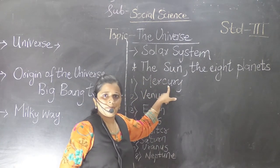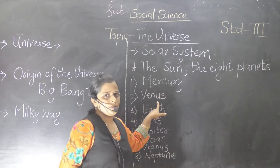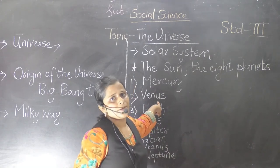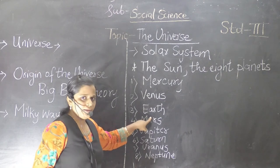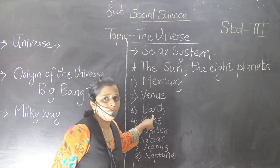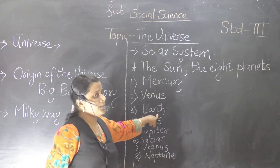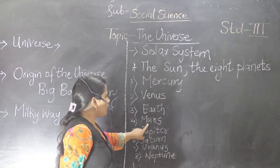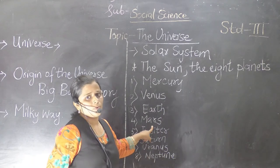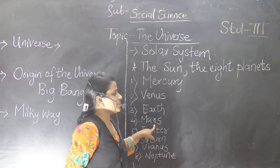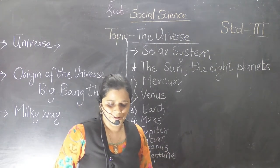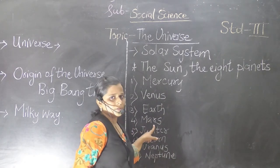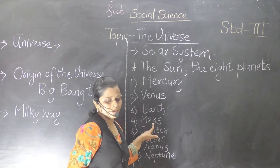Venus is also known as the morning and evening star because it appears bright to us. Mars is also known as the red planet.